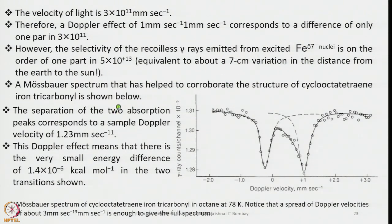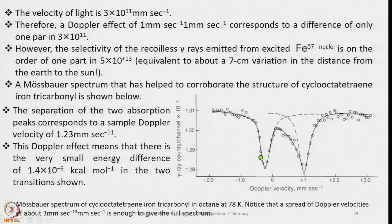The Mössbauer spectrum has helped corroborate the structure of cyclooctatetraene iron tricarbonyl. The separation of the two absorption lines — one positive, one negative — corresponds to a Doppler velocity of 1.23 mm/s. This Doppler effect means there is a very small energy difference of 1.4 × 10⁻⁶ kcal/mol between the two transitions shown. This is a typical Mössbauer spectrum of the cyclooctatetraene iron tricarbonyl complex.